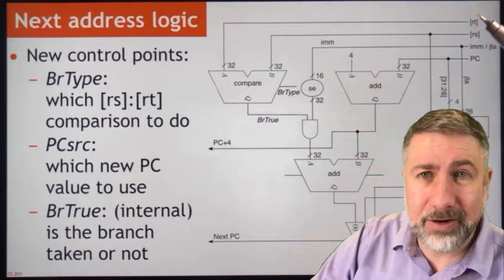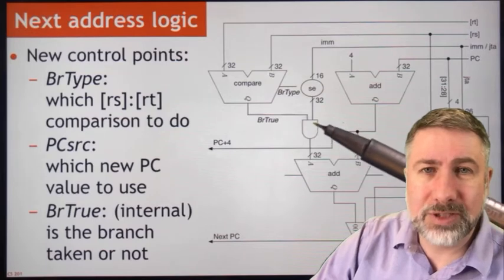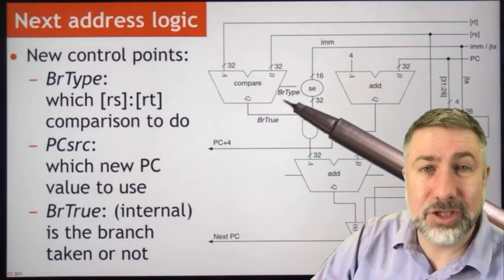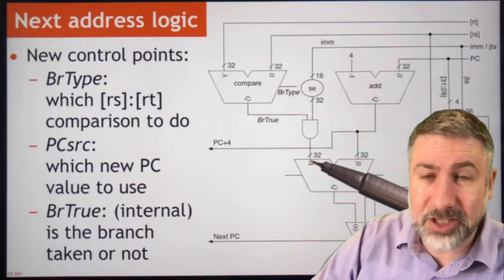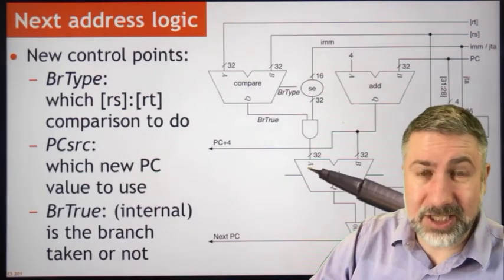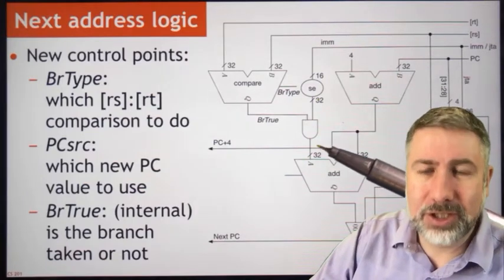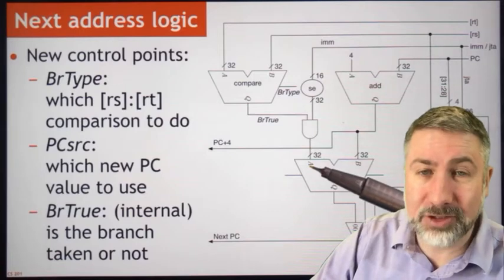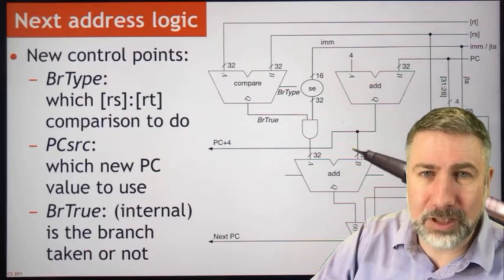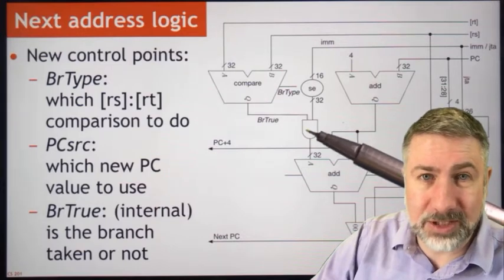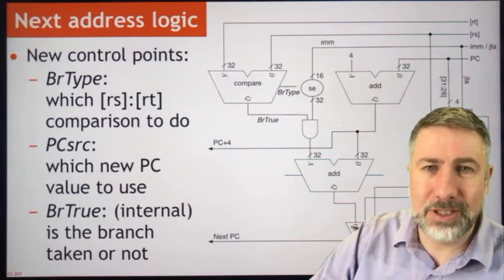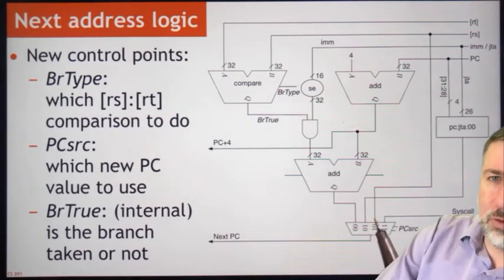We compare RS and RT, and based on the kind of branch we're doing, we decide whether that immediate value is added or not. The immediate value is added if the branch is successful, and not added either if the branch is unsuccessful or if we're not doing a branch at all. For most instructions, the branch type signal is such that the next address is just PC plus 4 — branch-true is zero, an AND gate blocks out the immediate value, and we add zero. The PC source for most cases is 00 for just PC plus 4.